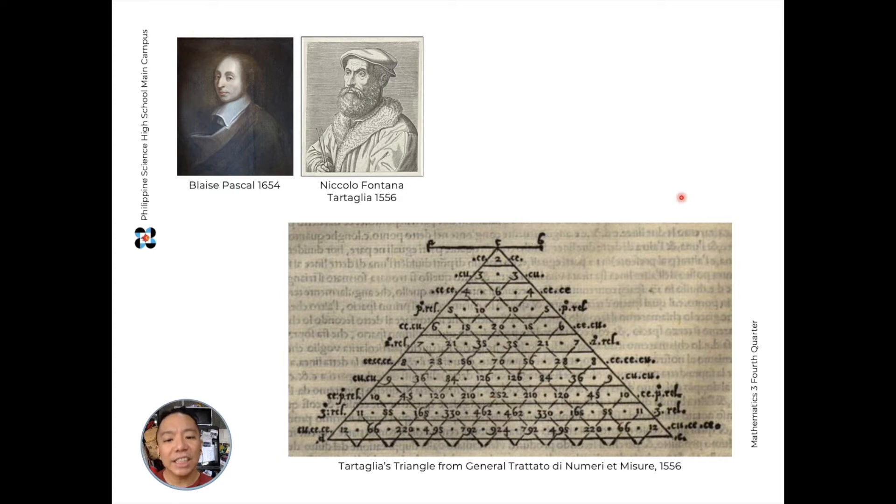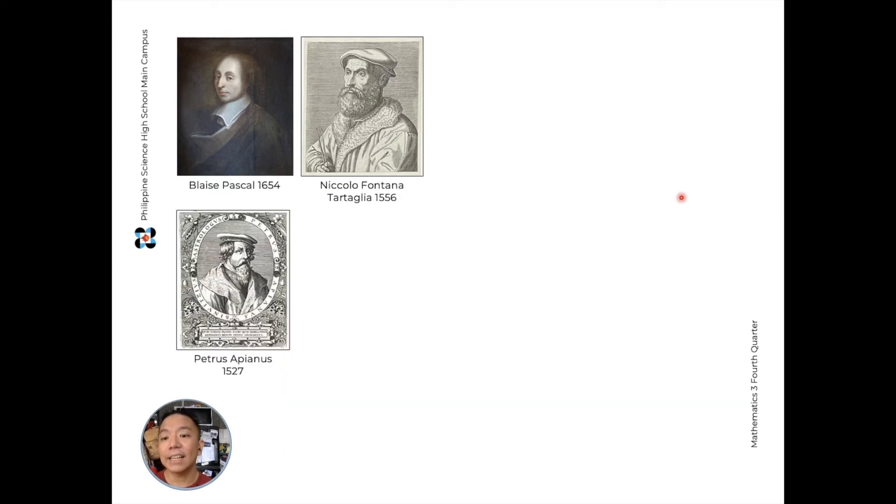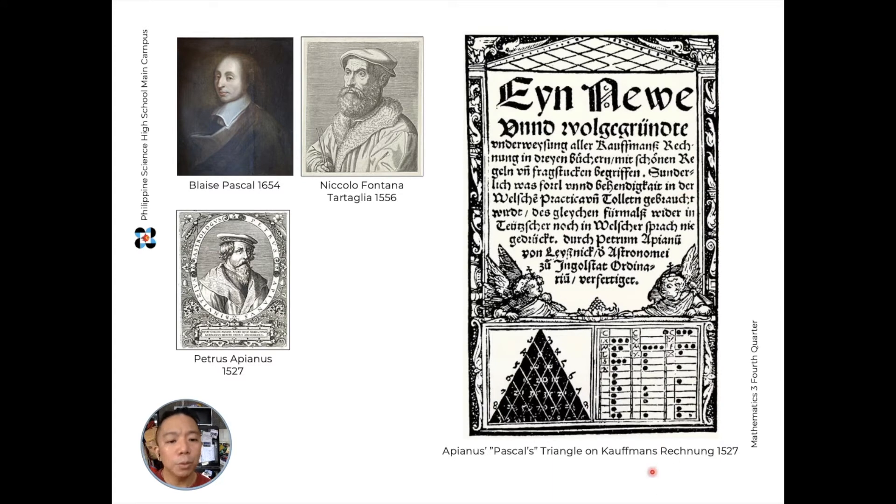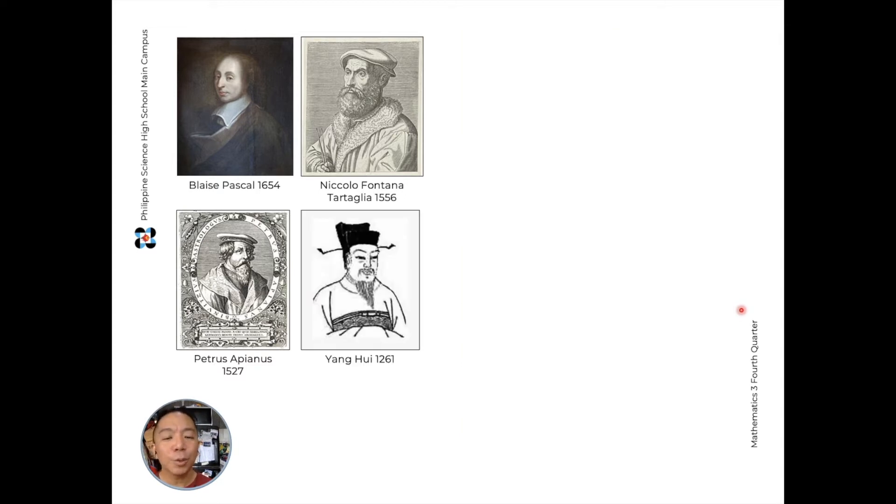And it's not even Tartaglia who originally discovered and published Pascal's Triangle. Petrus Apianus, I would say he's a German. But there was no Germany as a country in 1527. So he's in one of the states that will become part of future Germany. He published a book called Kaufmann's Rechnung, I don't know if I'm pronouncing it correctly, in 1527. And on its cover, there's an illustration of Pascal's Triangle. Although in the case of Apianus, he was only about 30 years before Fontana. And again, it's not even the earliest.